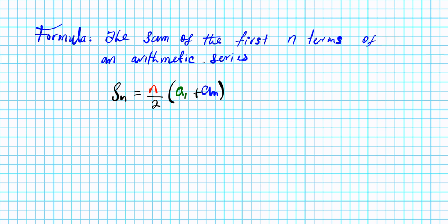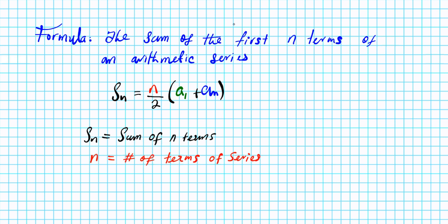If you take a look at this formula, how many variables are there? In this equation there are four variables. S sub n represents the sum of the first n terms. n represents the number of terms of the series. a1, as the subscript indicates, represents the first term of the series. And a sub n represents the nth term — the last term of the series.